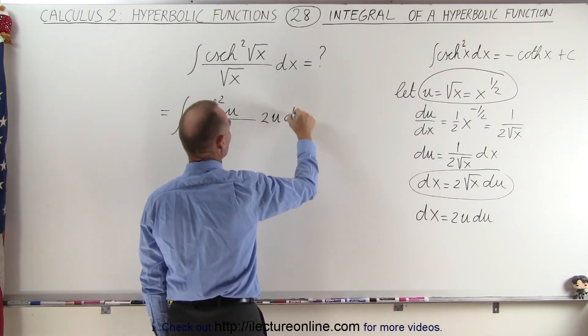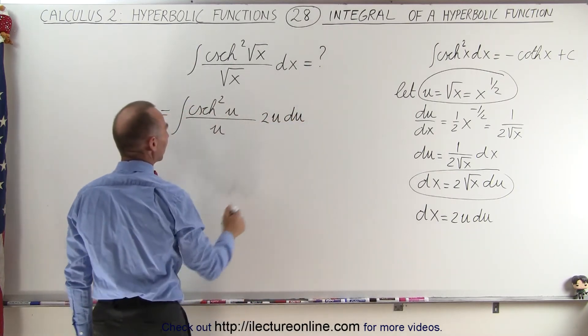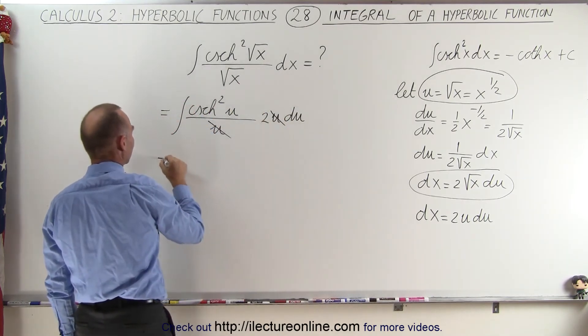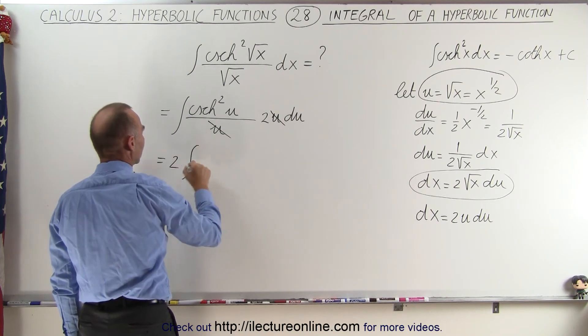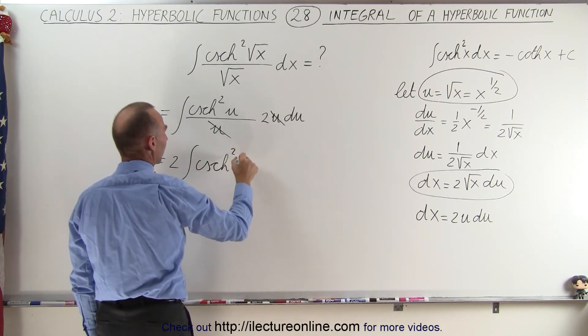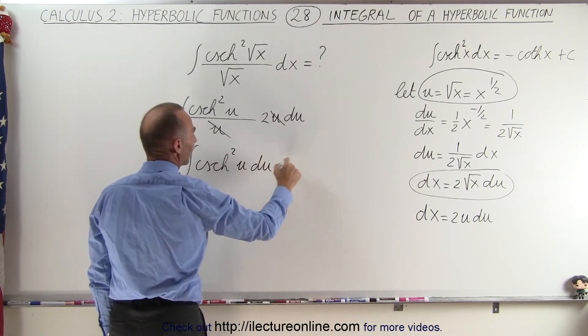I get 2u du and then I realize that this u cancels out with this u. I can bring the 2 outside. This is equal to 2 times the integral of the hyperbolic cosecant squared of u du.